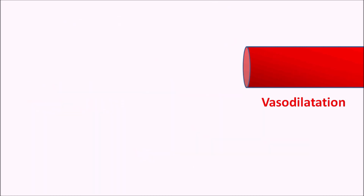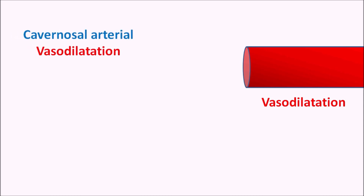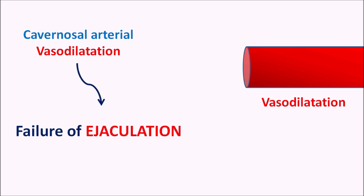These drugs can also produce cavernosal arterial vasodilation, which results in erection of the penis for longer periods, leading to failure of ejaculation and priapism — pain during erection because of failure of ejaculation.